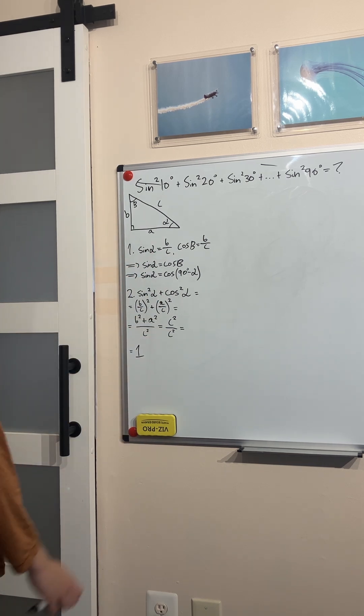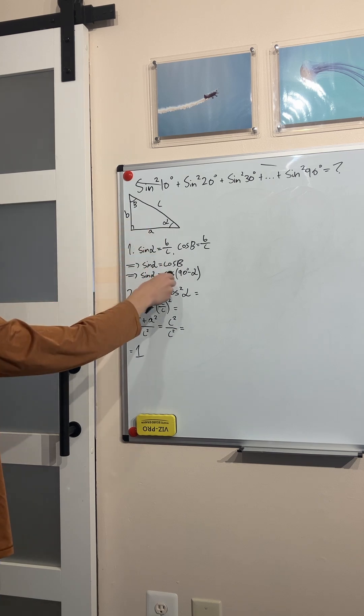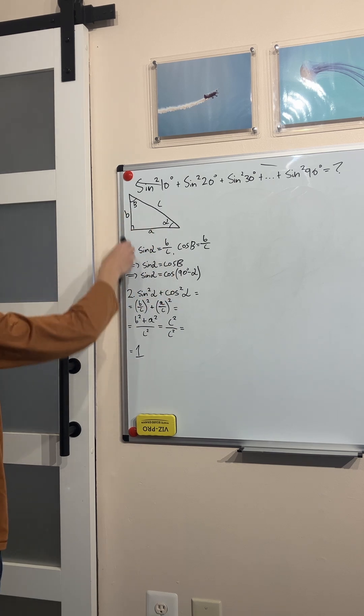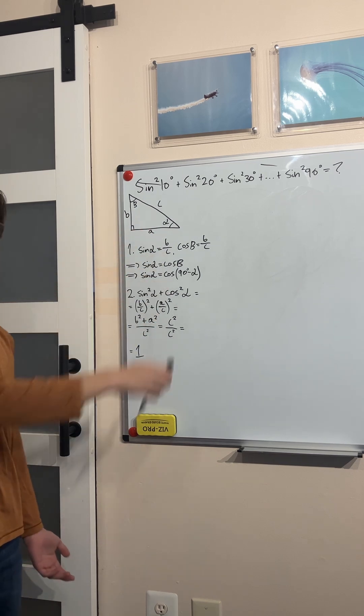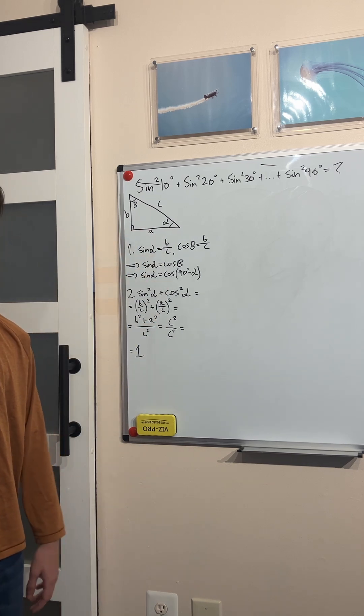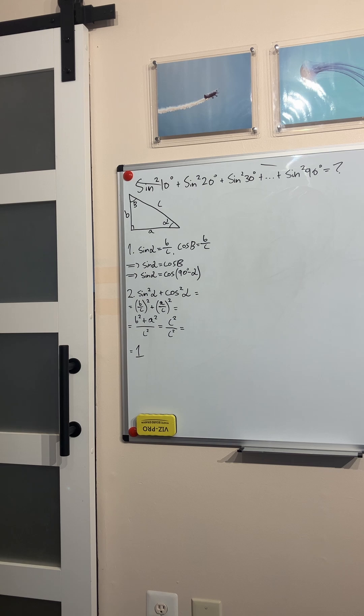First one: look that the sine of alpha is equal to b over c, and the cosine of beta right here in this triangle is also b over c. What is special about alpha and beta? They are both complementary angles. They add up to 90 degrees.